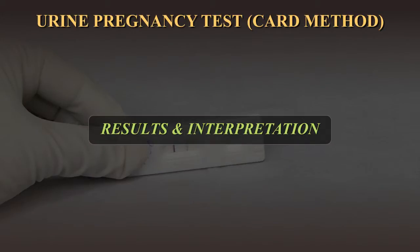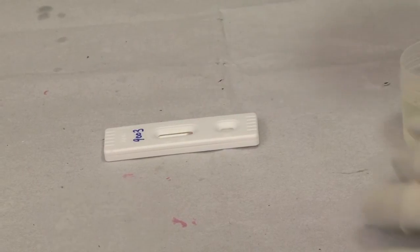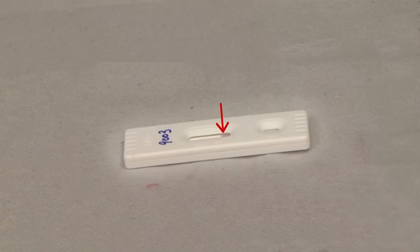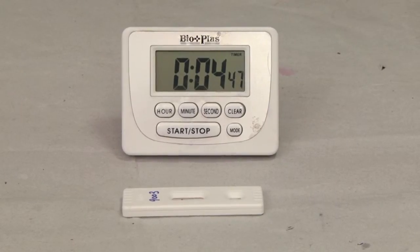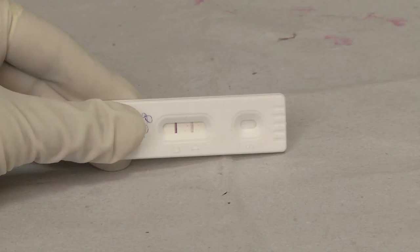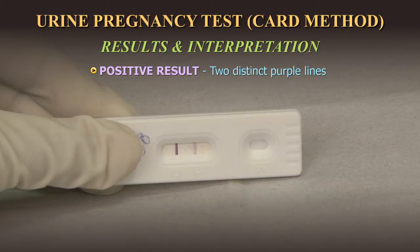Results and Interpretation: Once you finish addition of the urine sample, you can observe it flowing across the result window. Observe the result window for the appearance of lines and interpret the result. The lines start appearing within a few seconds after the sample flows across the result window. A positive result is indicated by two distinct purple lines in the result window, one at C and one at T. The result for a positive urine sample appears within two minutes.